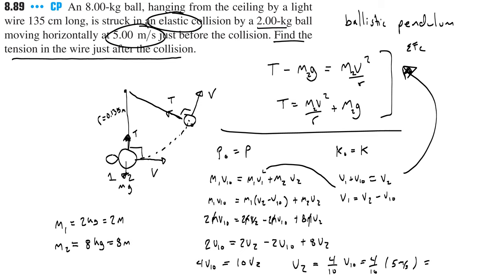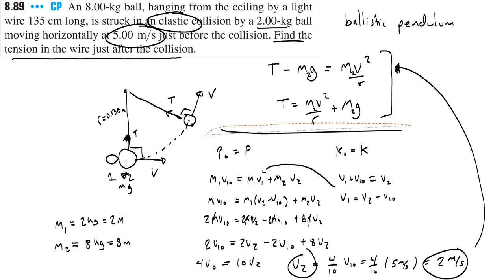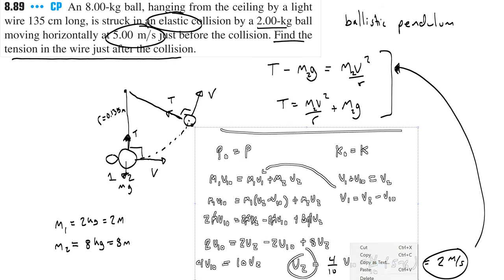So we're going to get 20 over 10, so 2 meters per second. Now that I know the velocity 2 meters per second is what the hanging ball has right after the collision, then I can plug that into the portion that we got with our centripetal force. Let's get rid of our momentum conversation.